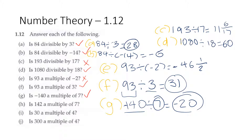Part h: is 142 a multiple of 7? 142 divided by 7 is equal to 20 and 2 over 7, and that's not an integer. So 142 is not a multiple of 7.